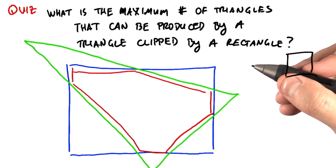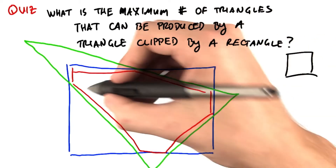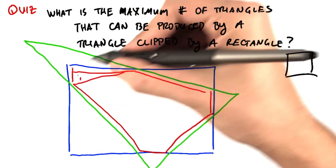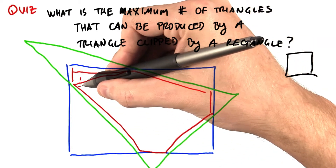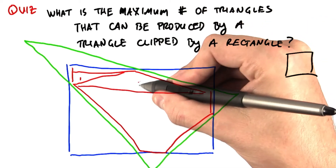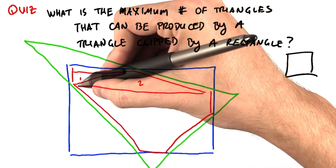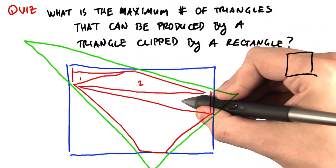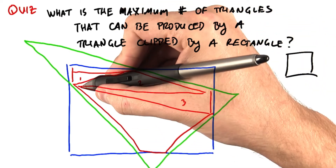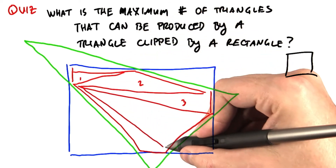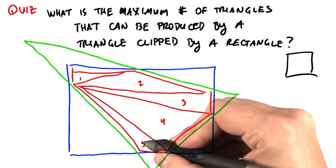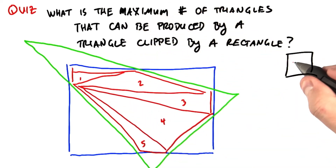And so how many triangles will this result in? 1, 2, 3, 4, and 5. So our answer here is 5.